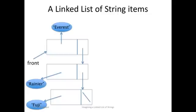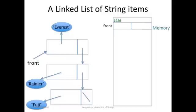Let's take a look at the memory representation of this linked list in order of traversal from first to last. The variable front is at address 1956, and it holds the address 2000, which is a pointer to the first node.